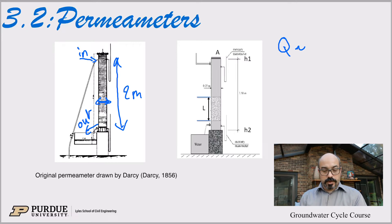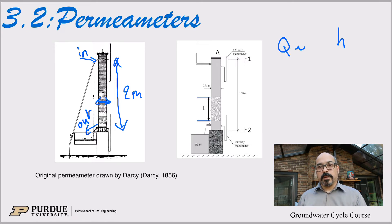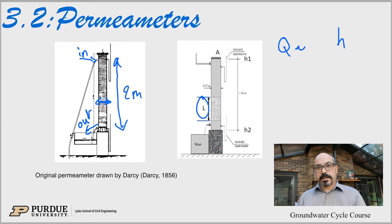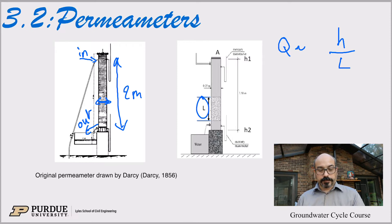Considering the parameters on the right hand side: the head H — if there's more head, there's more pressure, so we should push more water through. H should be a factor that drives the flow. Now L: if there's more sand, think friction — the water has to work to get through. So the more length of sand there is, the less water we should expect. So H over L is probably a good description.